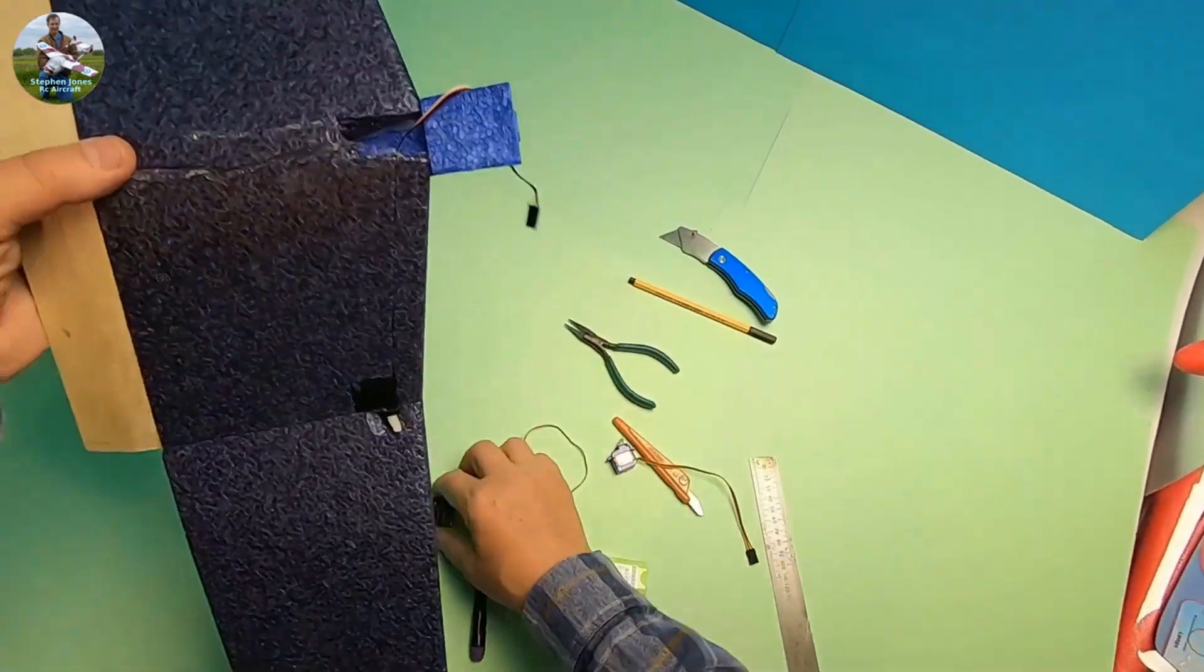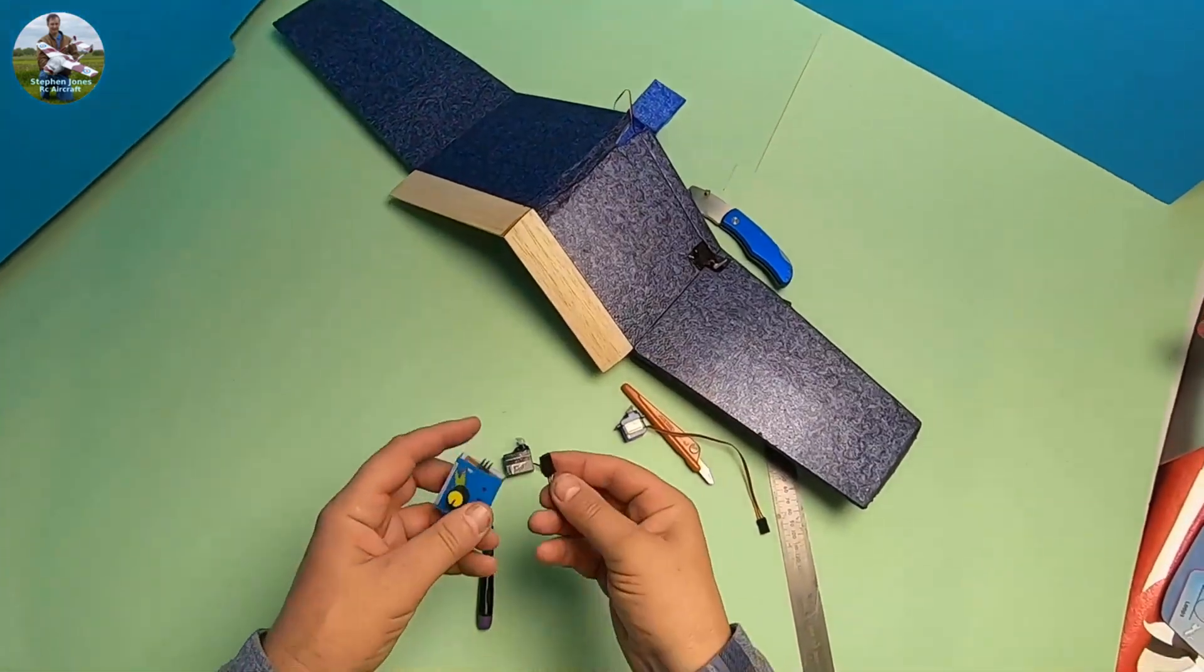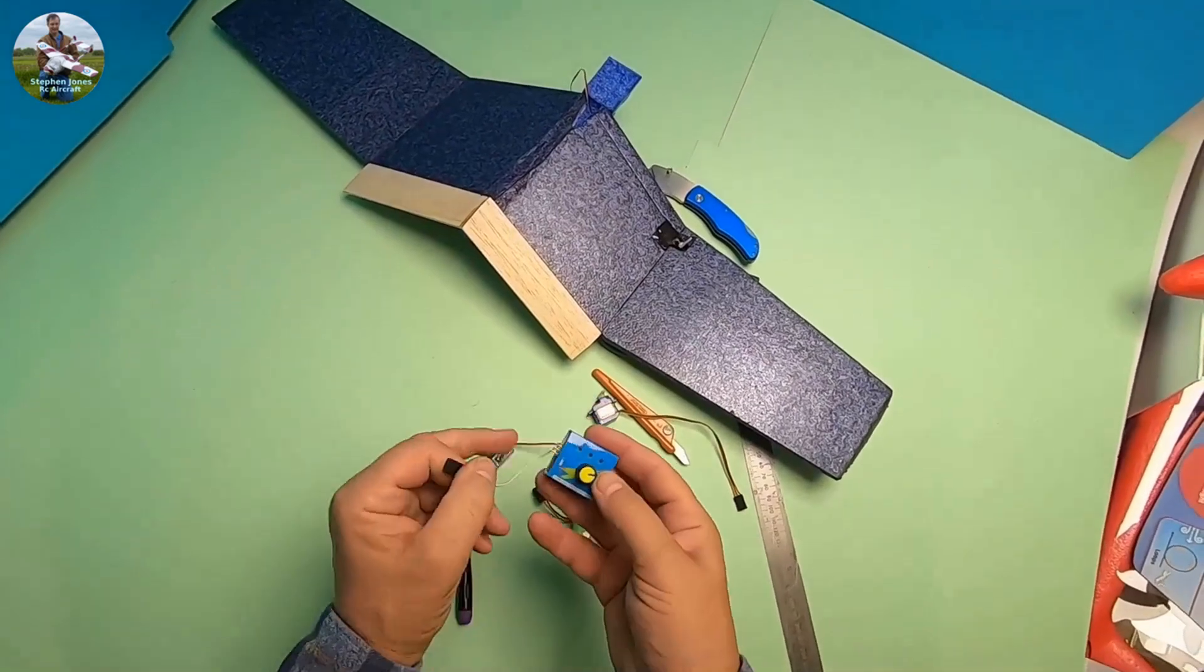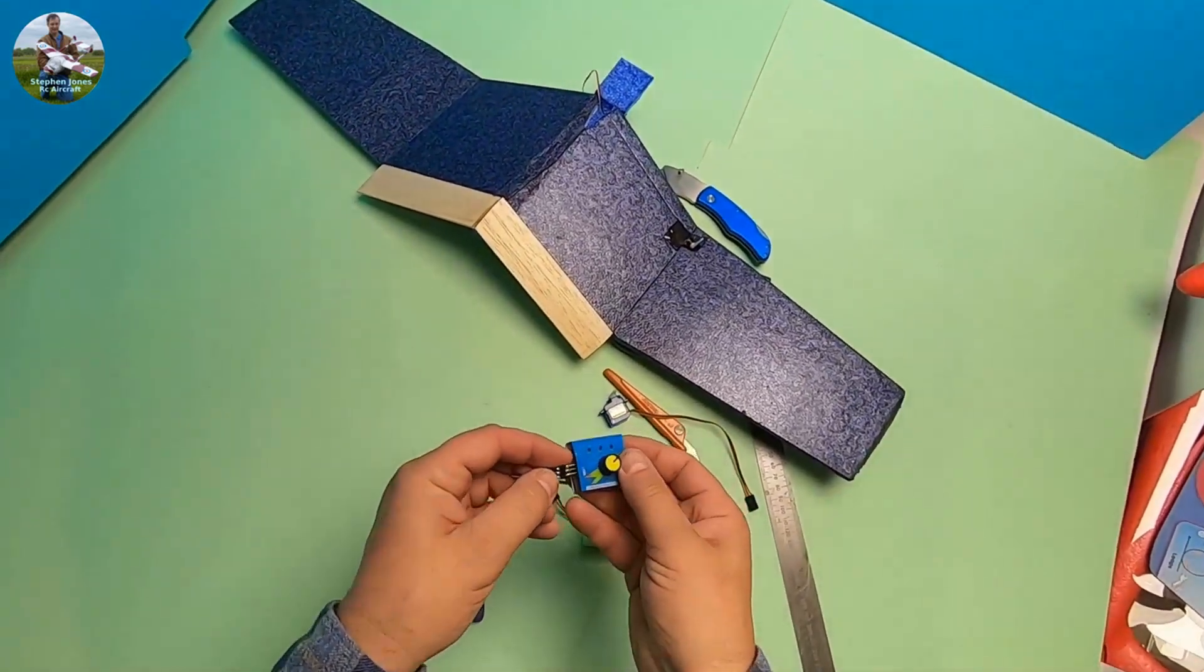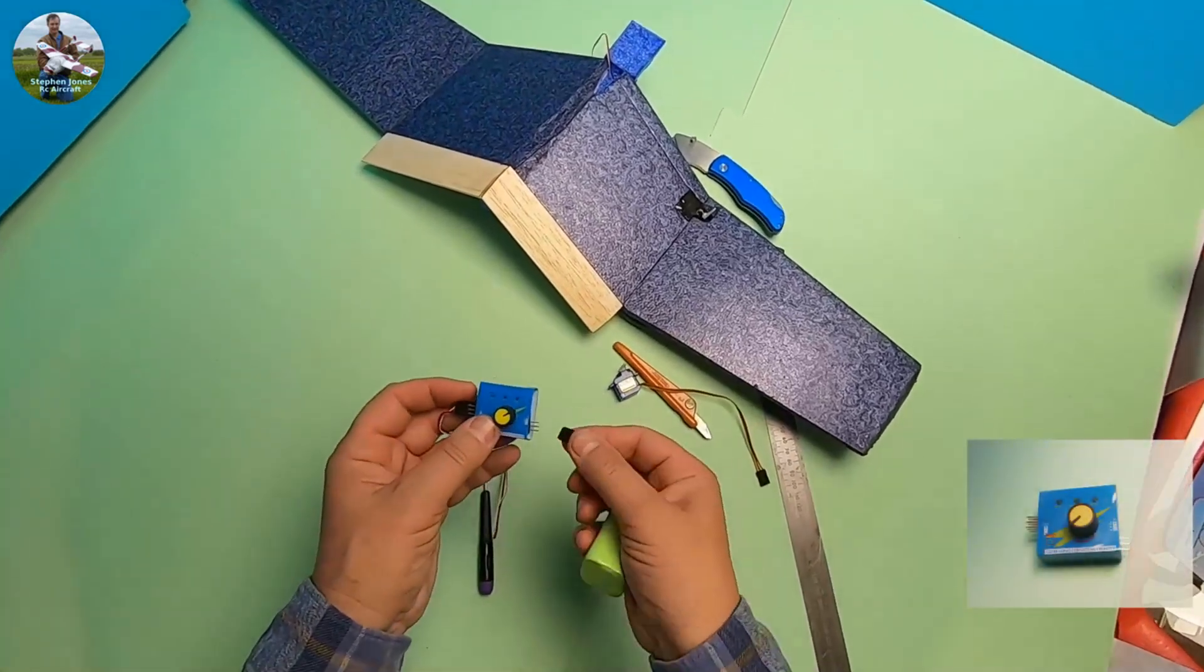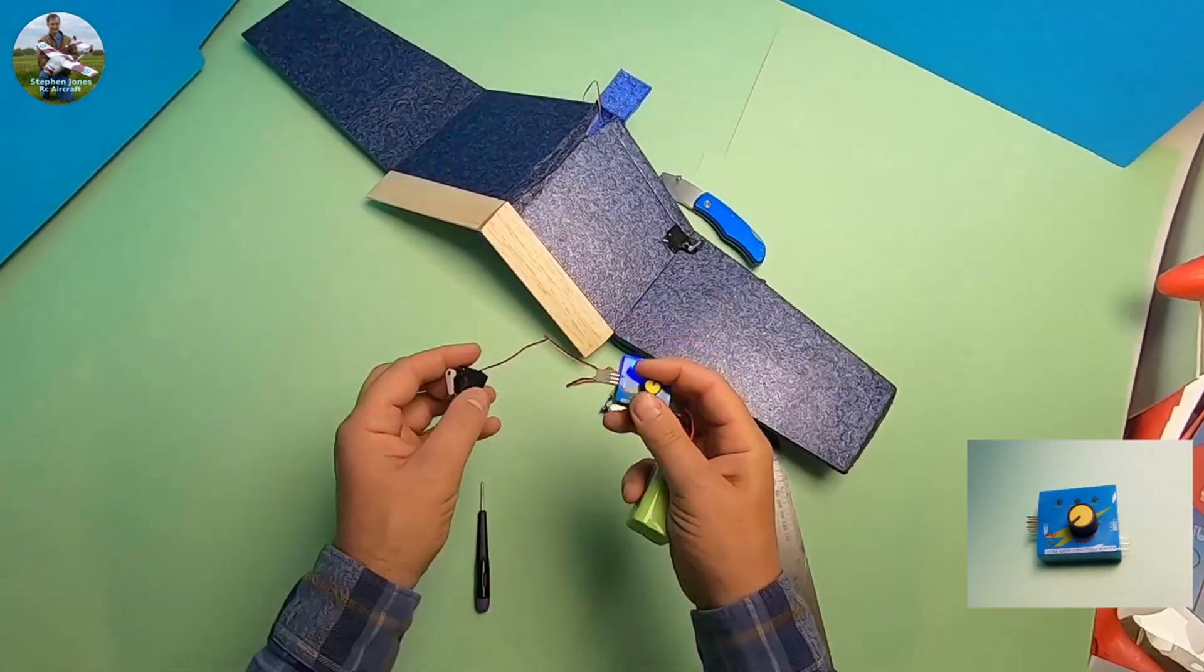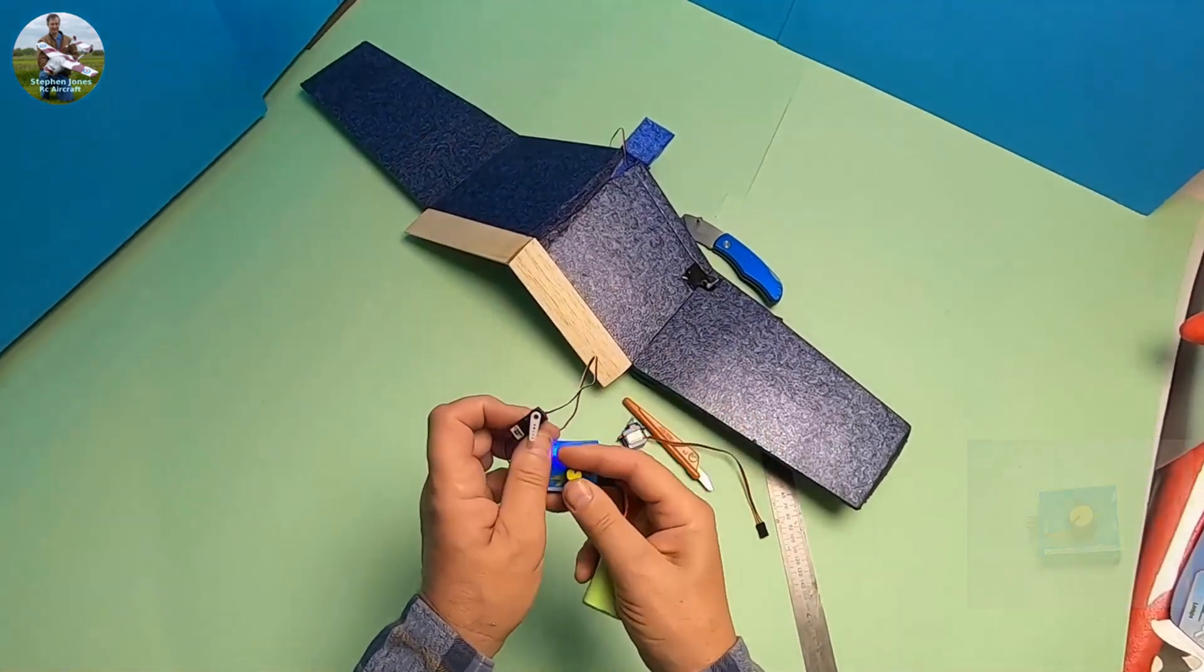All you need to do is make sure that your servo is centered first. Because once it's fitted into the wing and it's not centered, you're going to struggle. Get one of these little things and check that your servo works correctly.